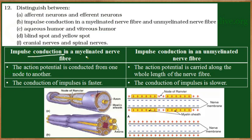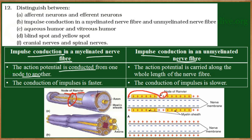Now, impulse conduction in a myelinated nerve fiber versus an unmyelinated nerve fiber. The myelin sheath is not found on all neurons — the axons of certain neurons are covered by the myelin sheath, and others are not. In myelinated nerve fibers, the action potential is conducted from one node of Ranvier to another, where the myelin sheath is absent at small junctions.